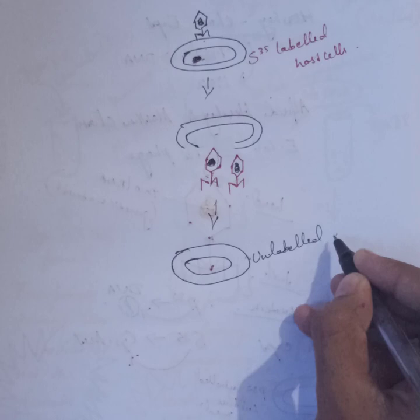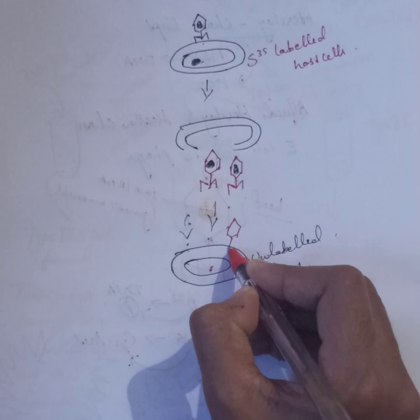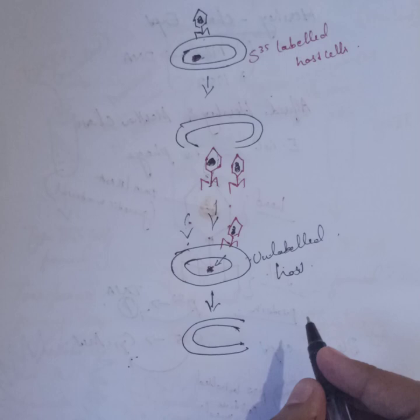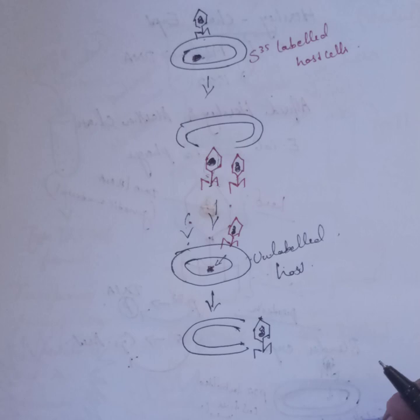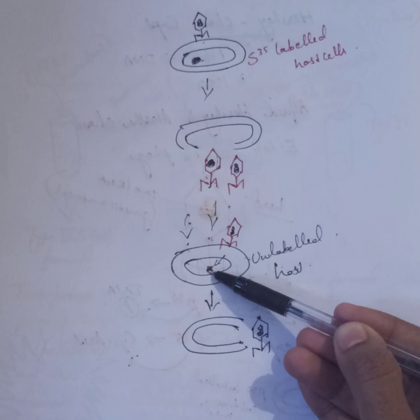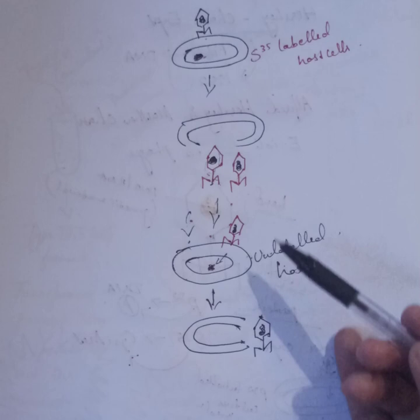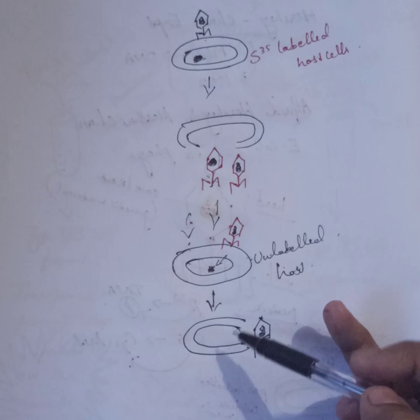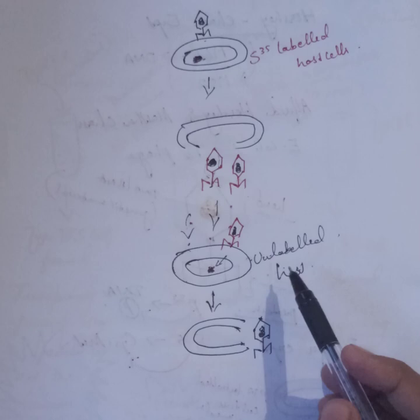This protein-labeled phage progeny is used to infect unlabeled E. coli host cells. Here the T2 phage is labeled and the E. coli host cell is not labeled. By reproduction of T2 phage, only the DNA will enter into the host — not the protein coat. But here the protein coat is labeled and the DNA is unlabeled. After infection, the protein coat on the host cell membrane is removed by blending, so only the DNA enters the host cell.